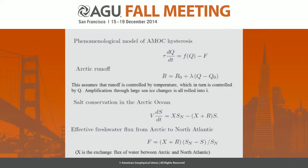I'm aware that changes in sea ice — particularly winter sea ice — are a very important part of Dansgaard-Oeschger events. In this model, amplification through sea ice changes is rolled into a factor lambda, which is a large term encompassing many things. We then need an equation for conserving salt in the Arctic Ocean, including exchange parameter x between the Arctic and the North Atlantic, from which we derive the freshwater flux from the Arctic to the North Atlantic.